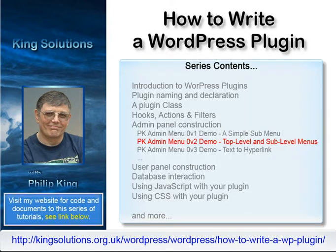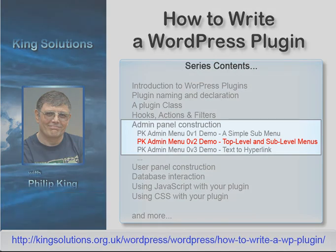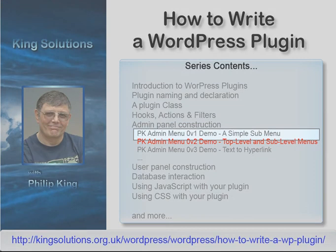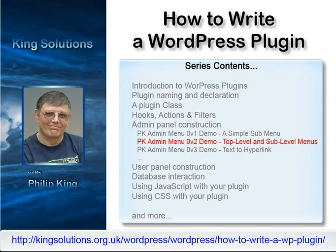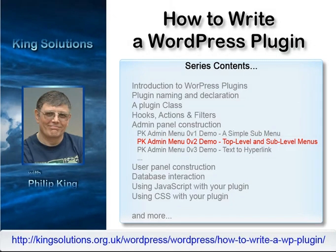This lesson is part of the series covering the WordPress administration menus and options pages. In a prior video, I demonstrated the very basics of how to make an administration menu by producing a plugin which added a submenu and admin page to the existing WordPress settings menu. In this lesson, we will go a step further and demonstrate how to create a custom top level menu with two submenus.